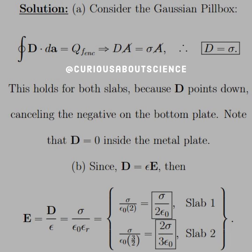Now we know that this holds for both slabs because on the bottom, D would point down, and that would cancel with the negative sigma or the charge free and closed. It's also worth noting that D equals zero inside the metal plate itself.